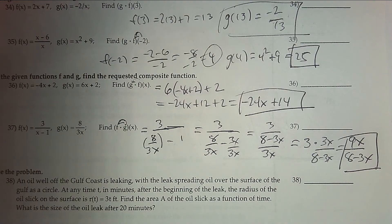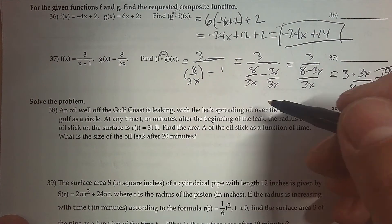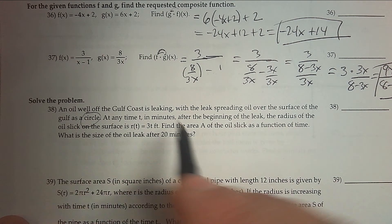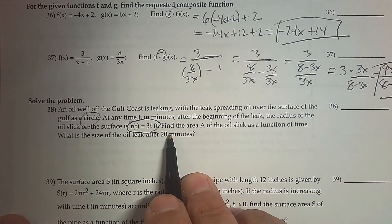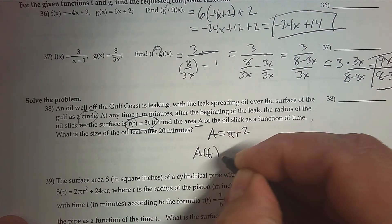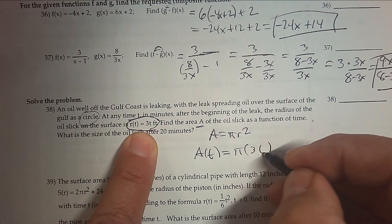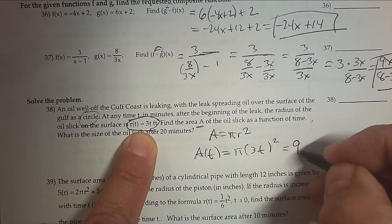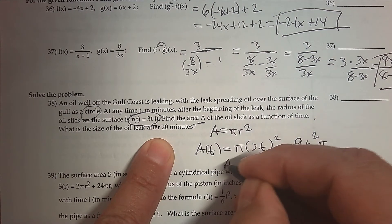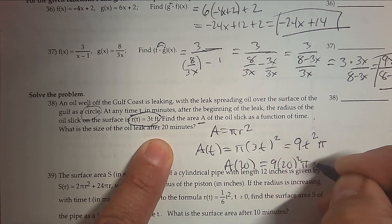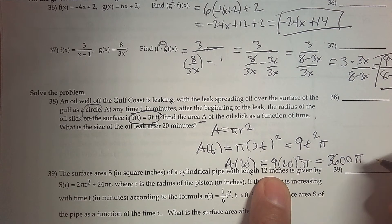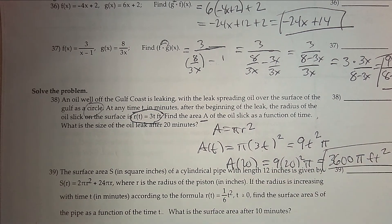Number 38: an oil well off the Gulf Coast is leaking, with the leak spreading oil as a circle. At any time t, the radius of the oil slick is given by 3t feet. Find the area of the oil slick as a function of time. Area of a circle is πr², but as a function of time, we take out r and put in 3t. So if I multiply that out, it's 9t²π. What's the size of the oil leak after 20 minutes? Plug in 20: that's 400 times 9, so 3600π, and it's in feet squared.